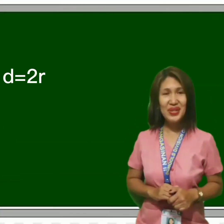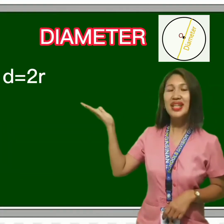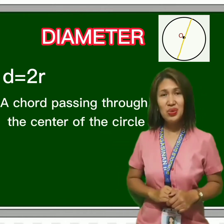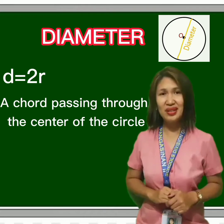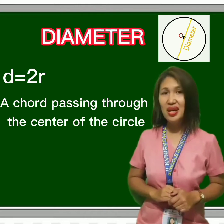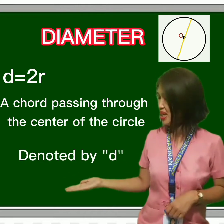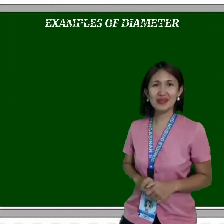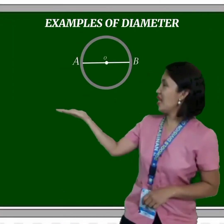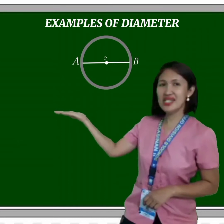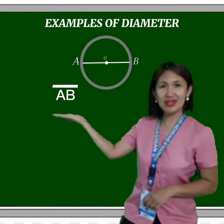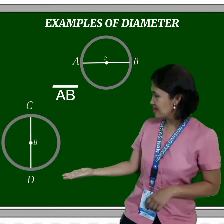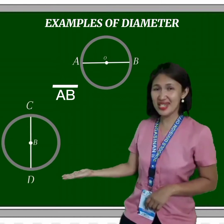Twice the radius is called the diameter. It is a chord passing through the center of a circle, and it is denoted by small letter d. For example, the diameter of the circle is segment AB, and the diameter of the circle is segment CB.